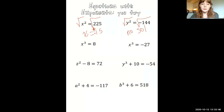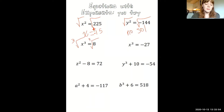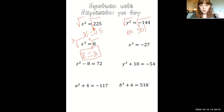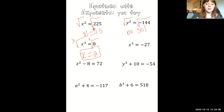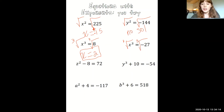The next one is the cube root of 8. We take the cube root of both sides, and we get x equals 2, because 2 times 2 times 2 equals 8. The next one, we also take the cube root of both sides. Because we're taking the cube root of negative 27, we get x equals negative 3.